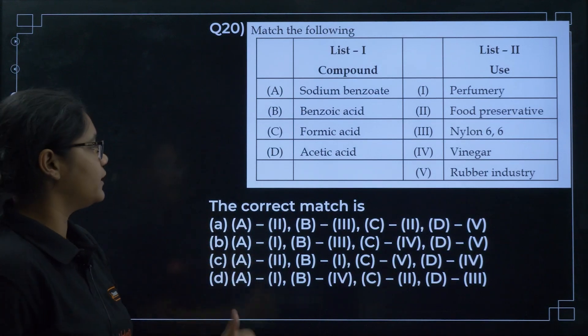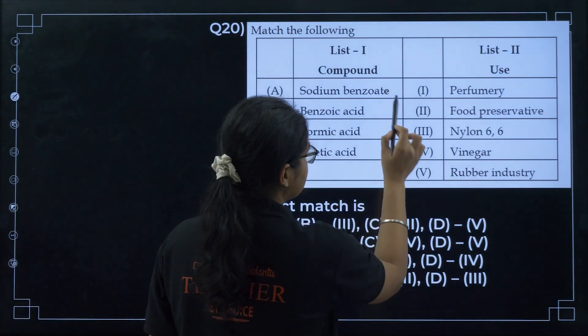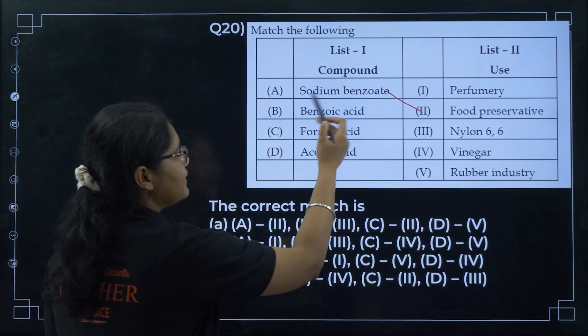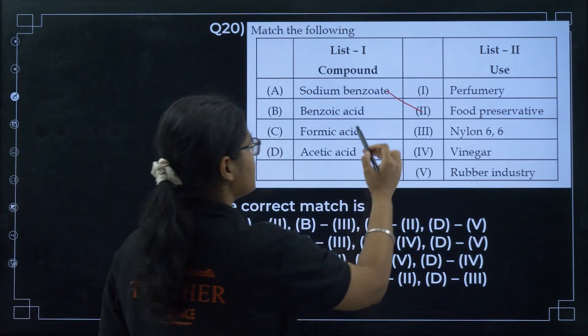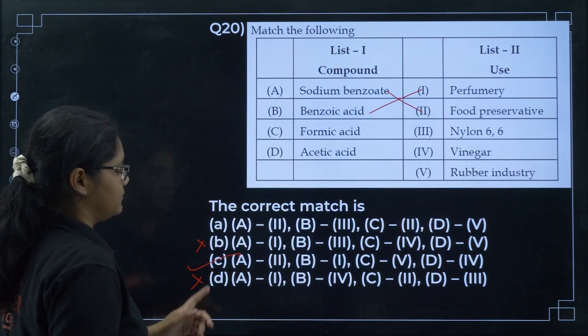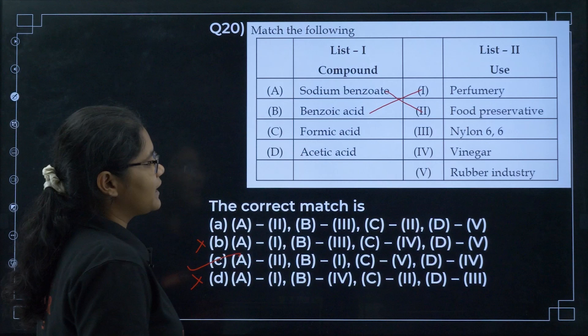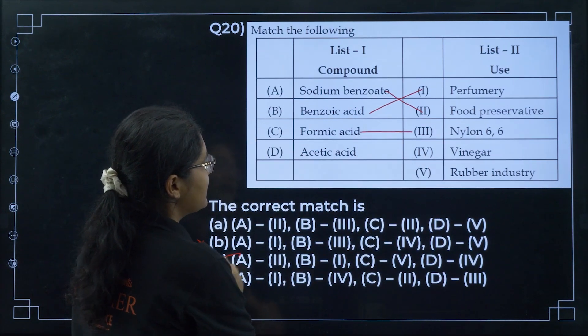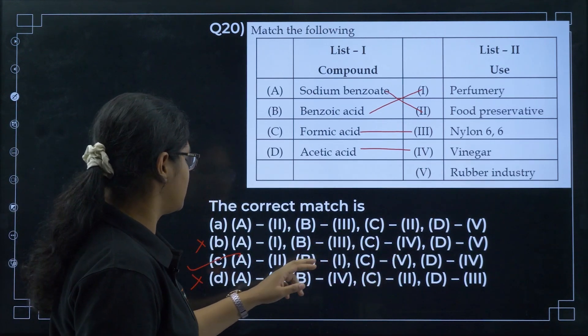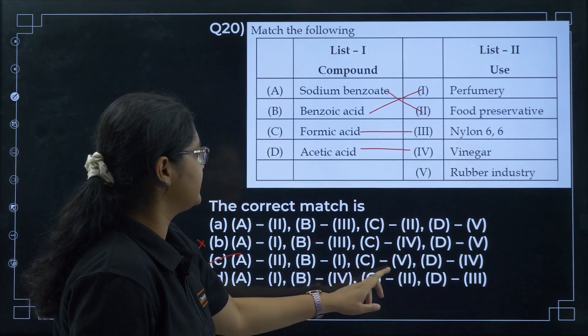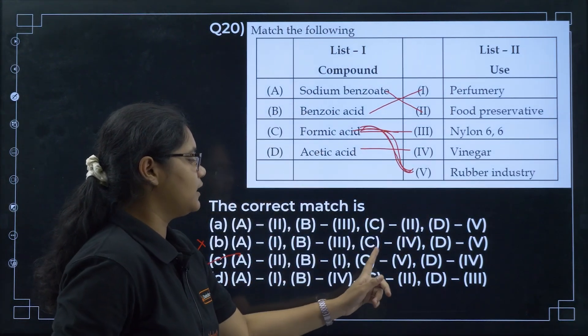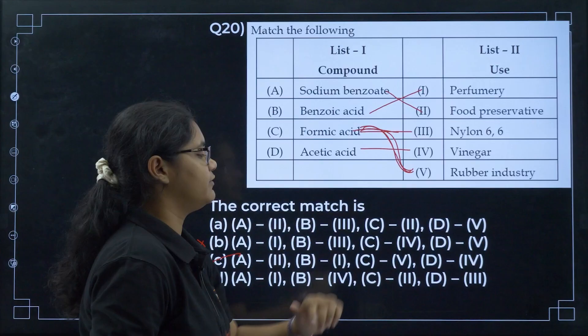Next, we have match the following. Sodium benzoate is used as a fruit preservative, so A with 2. I can eliminate B and D. Benzoic acid is an aromatic compound. Aromatic compounds are often used in perfumery. So B is 1, option C here. Then formic acid is used in rubber industry and acetic acid is used in vinegar. So C is 3 and D is 4.